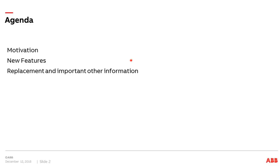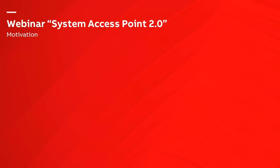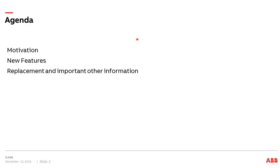I will start now with the presentation. The topic today is Free at Home — the new system access point which will be released next year. First of all I will give you some general and background information about the motivation: why we need a new system access point. Then we will see what is new, what is not new, and some important information about what you have to know in case of replacement — whether you have to replace the old one and so on.